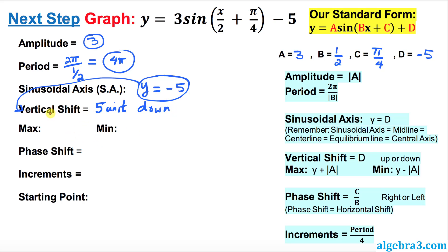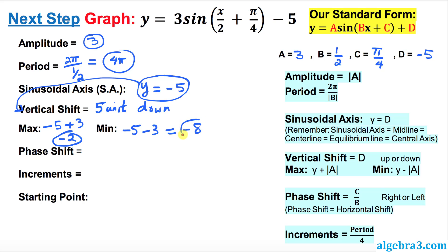Now we're going to see how this graph is going to look — how high the maximum goes and how low the minimum goes. The maximum is your d value plus the absolute value of amplitude: negative 5 plus 3 gives us negative 2. The minimum is d minus the absolute value of amplitude: negative 5 minus 3 gives us negative 8.